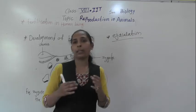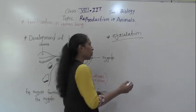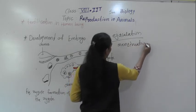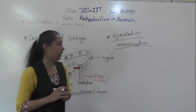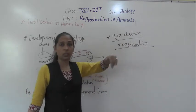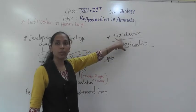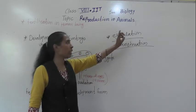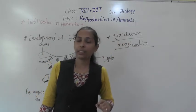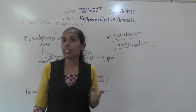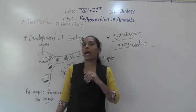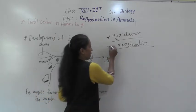If the ovum is not fertilized by a sperm, then that unfertilized egg is expelled out through the vagina along with some muscles and blood, and that process is known as menstruation. So these are the two processes: ejaculation — the introduction of sperm into the vagina — and menstruation, which occurs when the egg is expelled out through the female's body if it doesn't get fertilized.